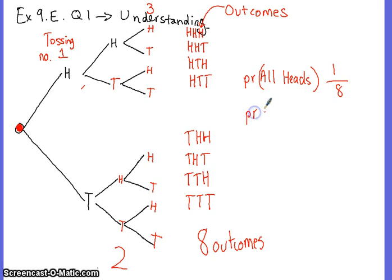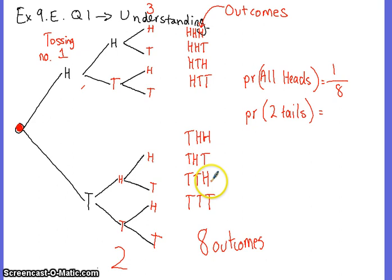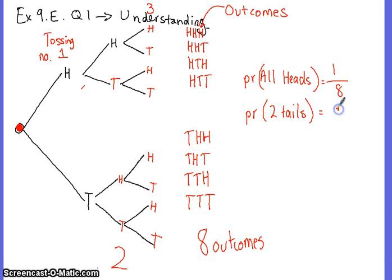For example, what's the probability of getting two tails when you do this tossing of the coin three times? There are three outcomes with exactly two tails — so the probability is three over eight. Remember, it's the number of the question being asked divided by the total possible outcomes.